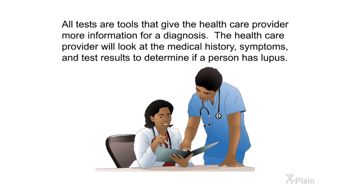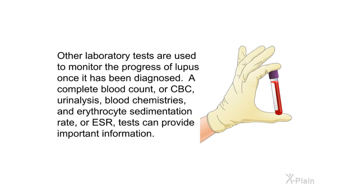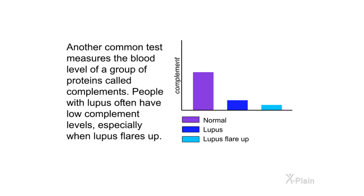All tests are tools that give the healthcare provider more information for a diagnosis. The healthcare provider will look at the medical history, symptoms, and test results to determine if a person has lupus. Other laboratory tests are used to monitor the progress of lupus once it has been diagnosed — a complete blood count (CBC), urinalysis, blood chemistries, and erythrocyte sedimentation rate (ESR) tests can provide important information. Another common test measures the blood level of a group of proteins called the complement. People with lupus often have low complement levels, especially when lupus flares up.